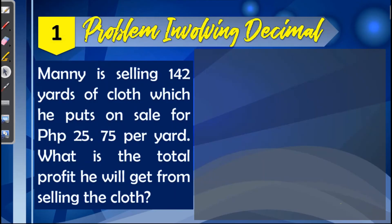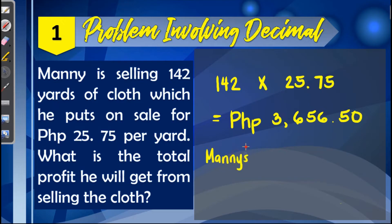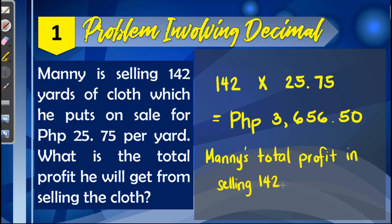Now let's have some problems involving decimals. Problem number one: Monay is selling 142 yards of cloth, put on sale for 25 pesos and 75 centavos per yard. What is the total profit from selling the cloth? Since we have 142 yards and the price per yard, we simply multiply: 142 times 25.75 equals 3,656 pesos and 50 centavos. That is Monay's total profit in selling 142 yards of cloth.